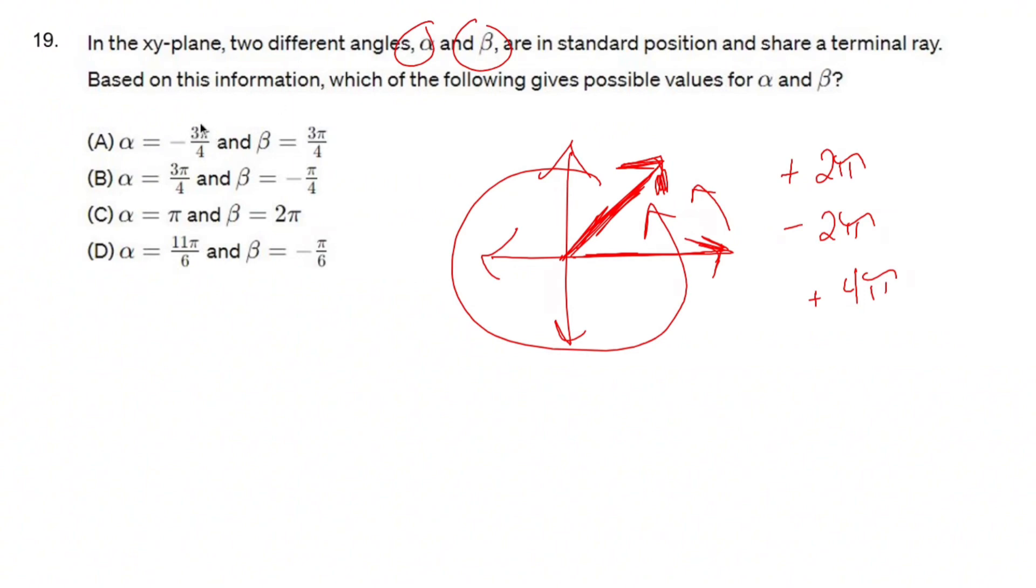Well, this is negative 3π/4, which lives over here. Is adding 2π going to get me 3π/4? No. Then A is not the option.